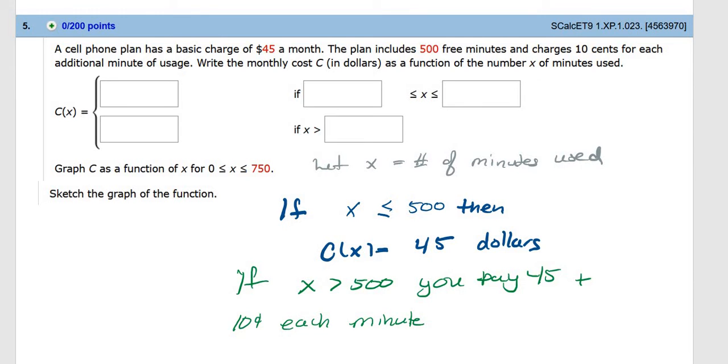After 500, you start to pay $45 plus 10 cents for each minute after the 500 minutes. But the problem is that x is given as just the minutes, and so you have a different thing happening at that cutpoint 500.